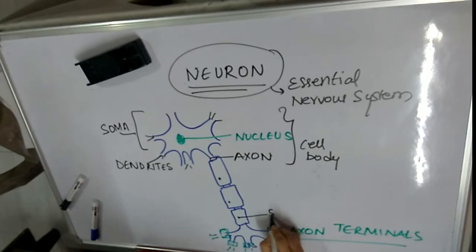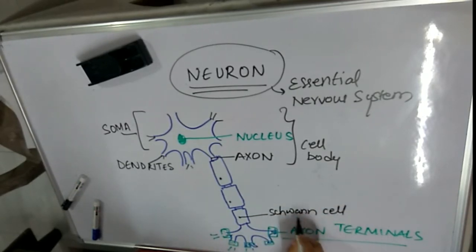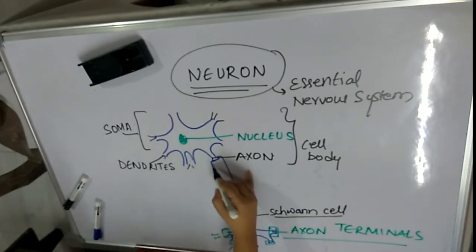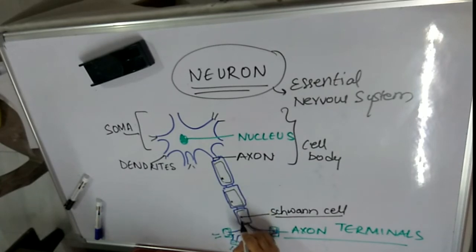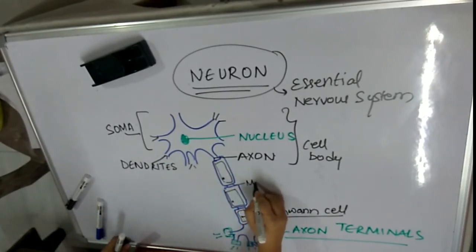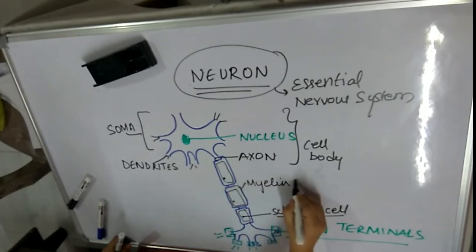Then we have some cells present along the length of the neuron called Schwann cells. The neuron is also lined by a layer. Whenever a layer is present in the neuron, it is called the myelin sheath.